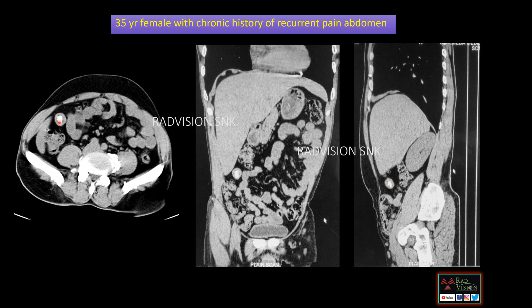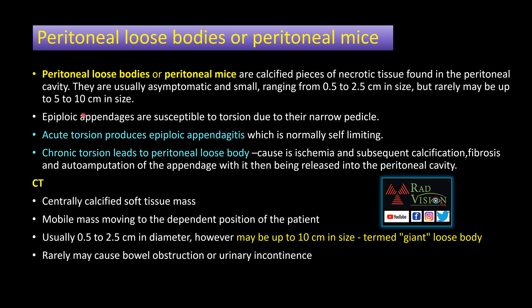Whenever you see a central calcified focus with a peripheral hypodense rim, closely related to the bowel loop and freely mobile, suspect peritoneal loose body. What is a peritoneal loose body or peritoneal mice? Generally, epiploic appendages are susceptible to torsion. Acute torsion produces epiploic appendagitis, which is self-limiting, but sometimes chronic torsion leads to auto-amputation of the appendage, causing ischemia, subsequent calcification, and formation of the peritoneal loose body. These are mobile masses mostly in dependent portions of the abdomen like Morrison's pouch or the pouch of Douglas, usually 0.5 to 2.5 cm in diameter, sometimes up to 10 cm — called giant loose bodies. Rarely they cause bowel obstruction or urinary incontinence. Remember: peritoneal loose body.